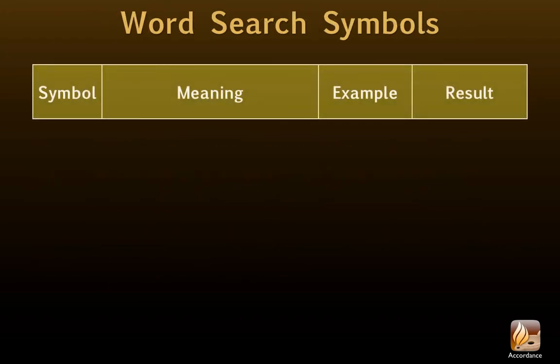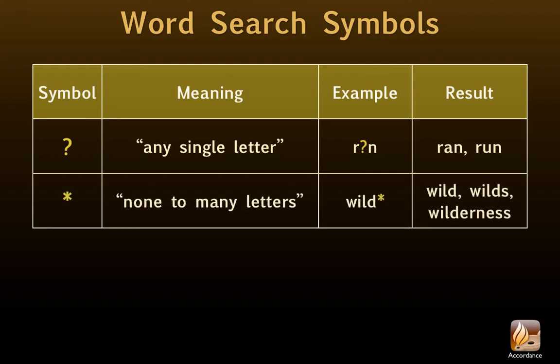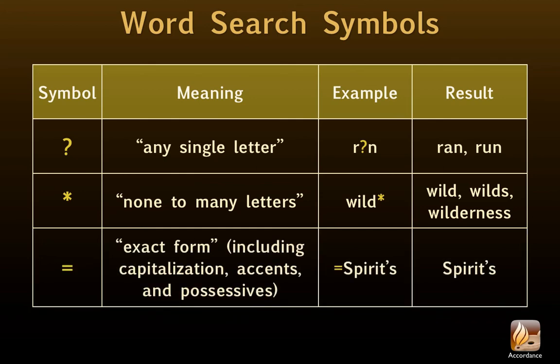Here are just a few of the symbols Accordance recognizes. The question mark means any single letter — so if we type R?N, Accordance will find all of the verses that have either 'ran' or 'run' in them. The asterisk means none to many letters — if we type WILD*, Accordance will find 'wild,' 'wilds,' or even 'wilderness' in the Bible. And equals means exact form, including capitalization, accents, and any possessives. For example, =Spirit's will find that exact form.